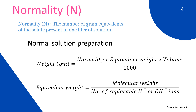Normality is the number of gram equivalent weights of the solute present in 1 litre of the solution. For normal solution preparation, the formula is: weight in grams = normality × equivalent weight × volume ÷ 1000. Equivalent weight = molecular weight ÷ number of replaceable H⁺ or OH⁻ ions.